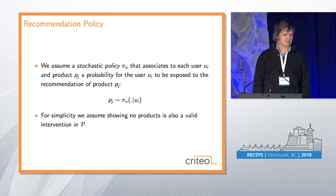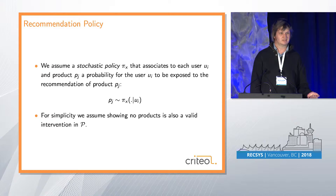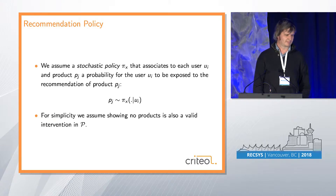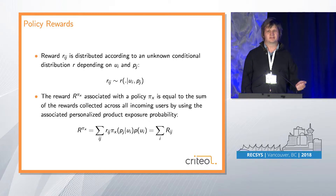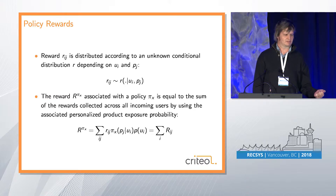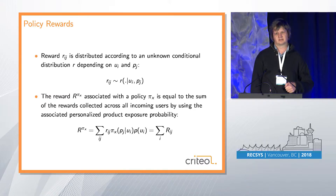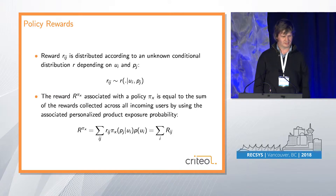We assume a stochastic policy that associates to each user i some product j with a probability. We usually deploy randomised policies in practice because we want some exploration — it's not necessarily what we think is the best action right now. We might also want to include in this framework that we don't make any recommendation at all. The problem of interest is: for this user-item pair, what kind of reward — which is also stochastic and unknown — do we get?